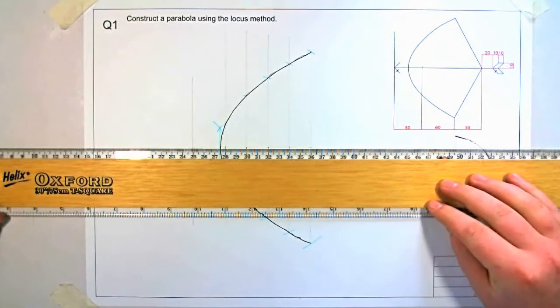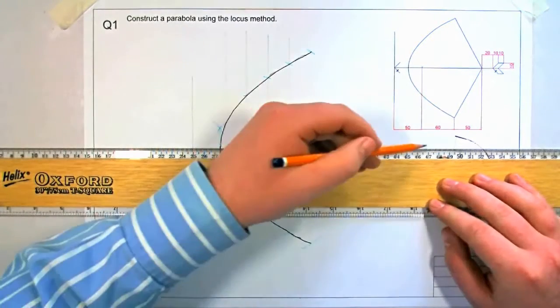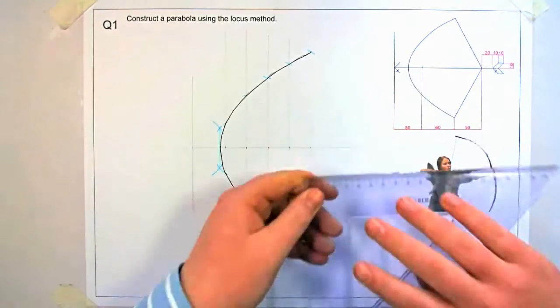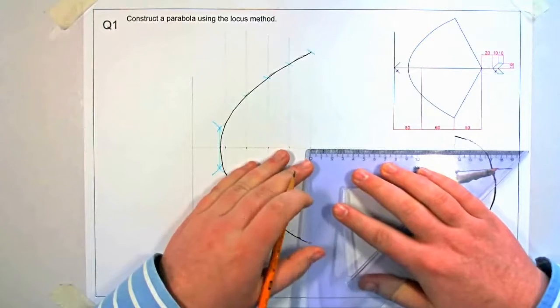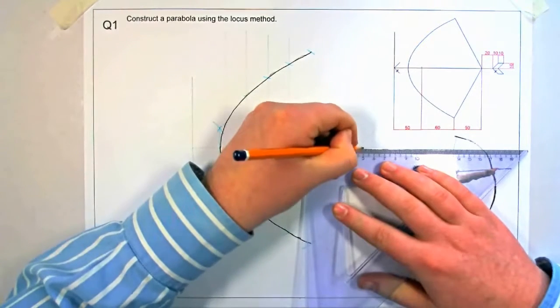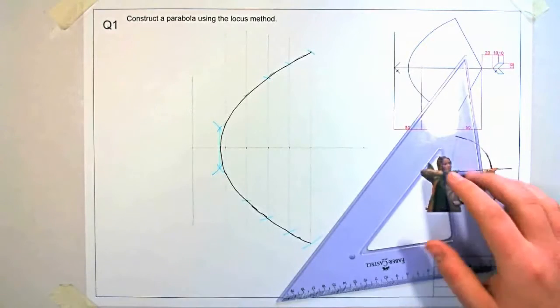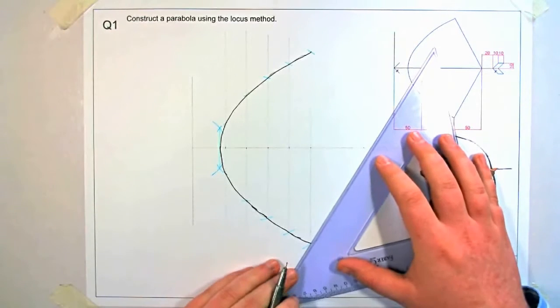Then continue the drawing to produce the bow and arrow as described in the question. We can see the strings come back a further 50mm beyond the parabola, like so. Connect this point back to the two points of the parabola.